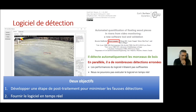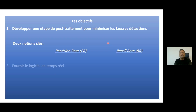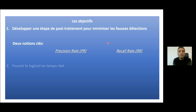We introduced two main objectives: first, we want to develop a post-treatment step to minimize the false detections; and second, we want to run the code in real time. For the first objective, let me explain two main notations: the precision rate and the recall rate.